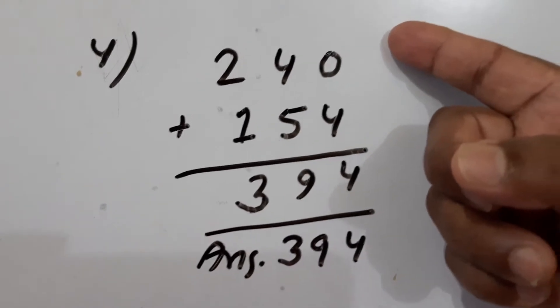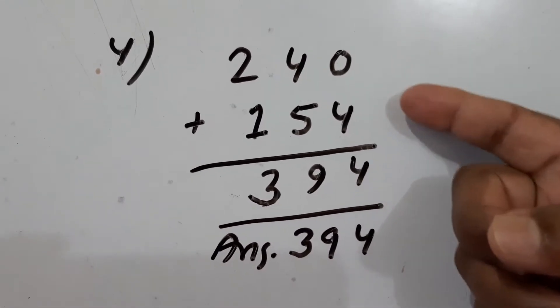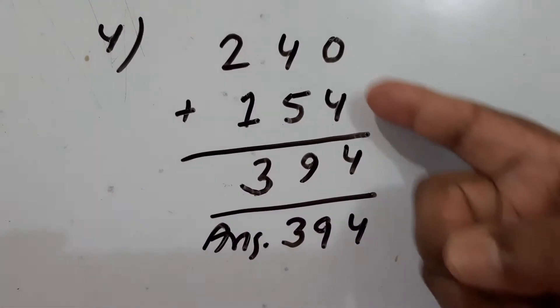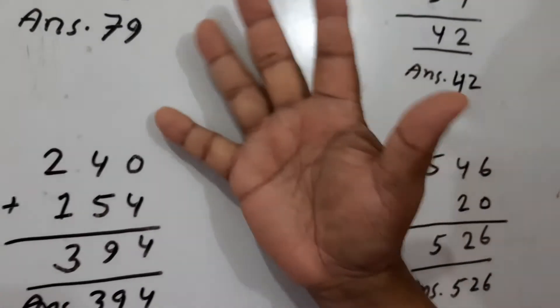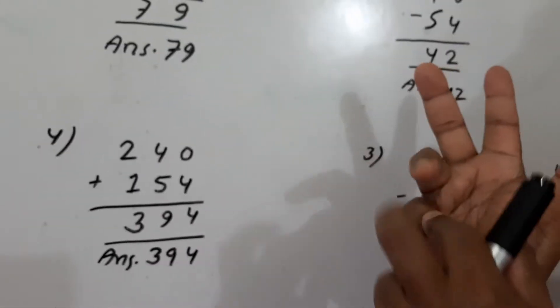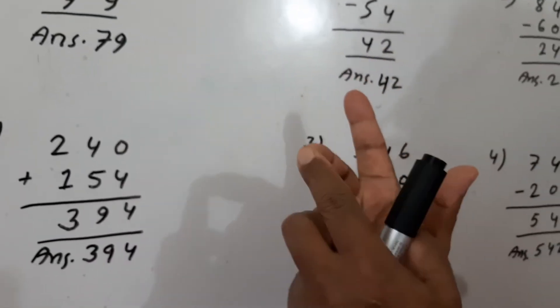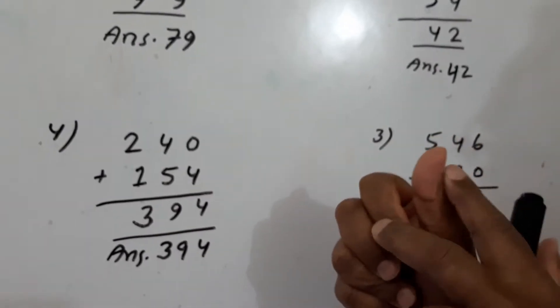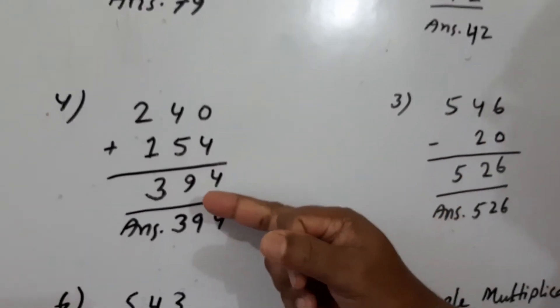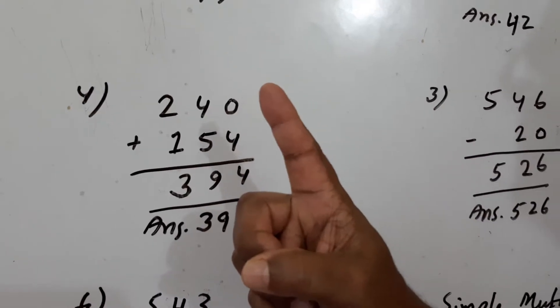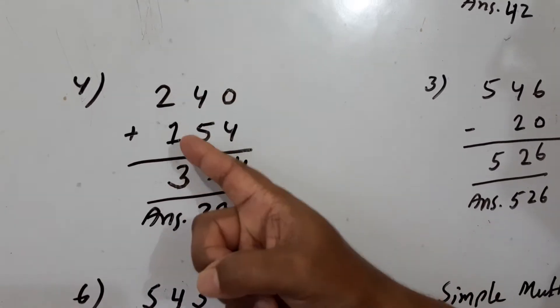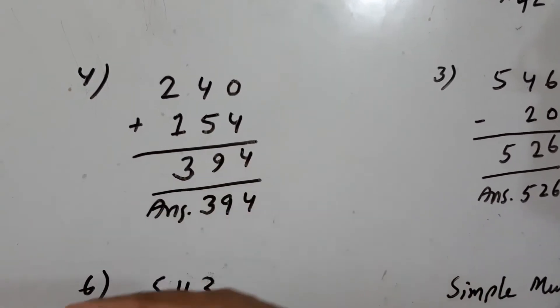240 plus 154. This 0 and this is 4. 0 plus 4 is 4. This is 5, take 5 in hand: 4, 5, 6, 7, 8, 9. This is 9. This 2, this 1, take 1 in hand: 2, 1, 3. Now see number 5.